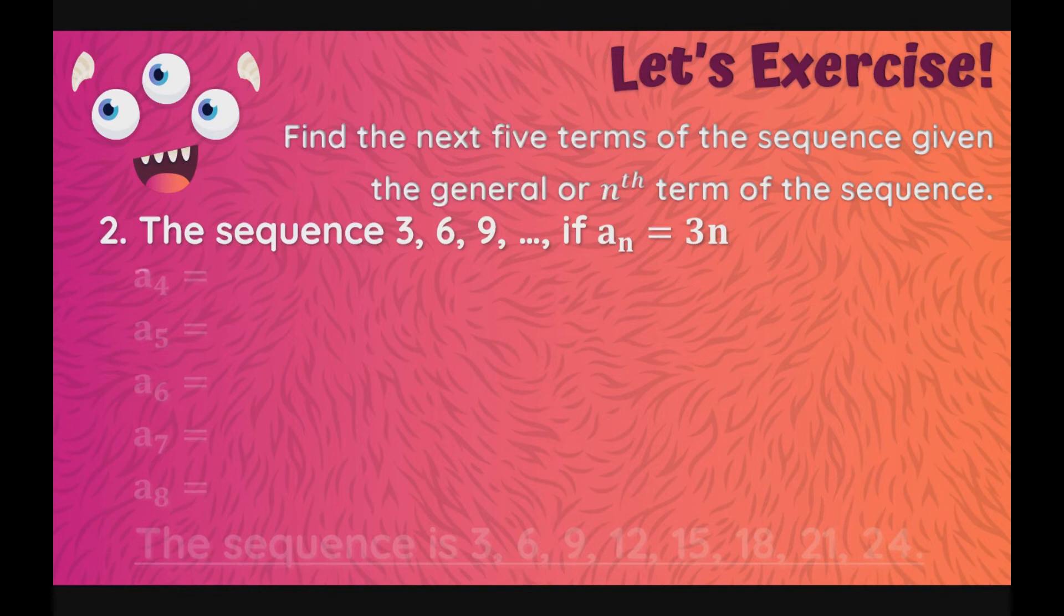Paano naman po kapag ang given ay yung ating 3, 6, 9, or first, third term, at ang general term is a sub n is equal to 3n. Hahanapin natin ngayon yung a sub 4 hanggang sa a sub 8. So, first, a sub 4 magiging simple lang, itong example number 2 natin is a simple one, magiging 3 times 4, which is 12.